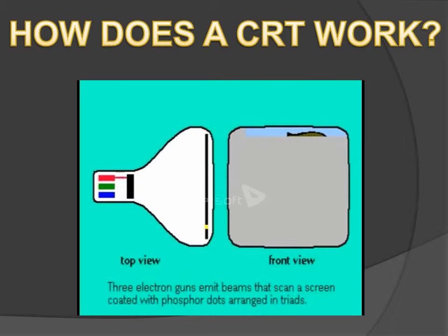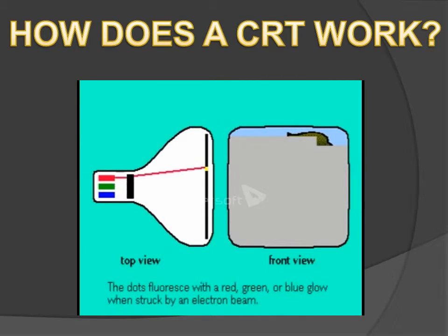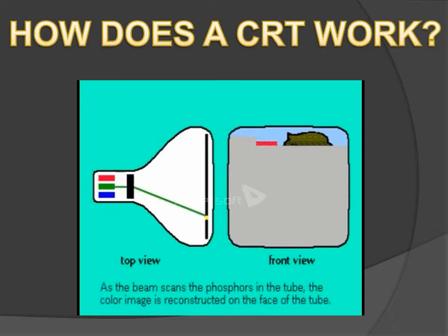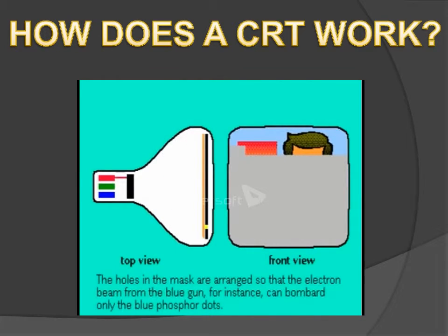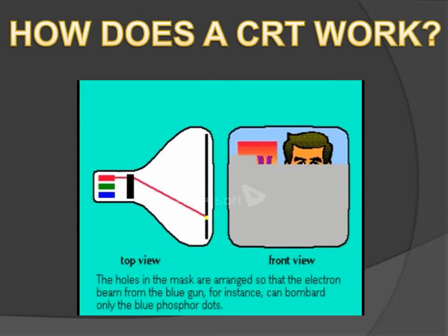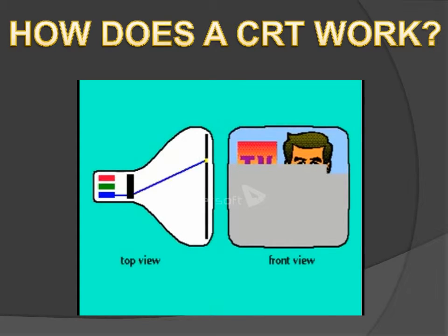These beams scan the screen in a series of lines, and each line is a row of dots. The dots are in groups of three — red, green, and blue — which are made up of colored phosphors that glow when struck by the electron beam. As the beam scans line by line, triggering the tiny dots, a colored image is reconstructed. To make sure that the electron beam hits the right dot, a black shadow mask with holes is used between the dots and the gun.